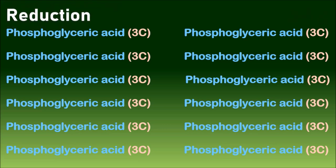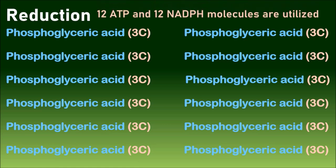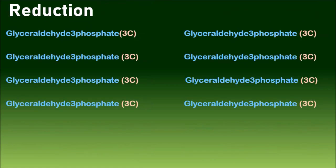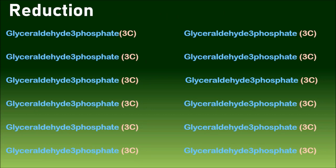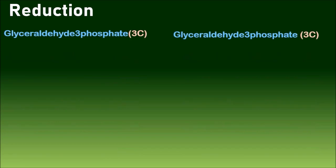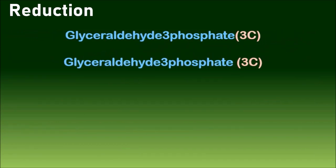Reduction: In this process phosphoglyceric acid molecules will be converted into glyceraldehyde 3-phosphate molecules by utilizing 12 ATP molecules and 12 NADPH molecules. This is reduction process. Among twelve molecules, two molecules of glyceraldehyde 3-phosphate will be involved in the formation of fructose.